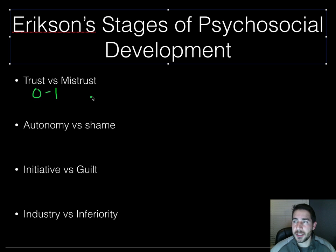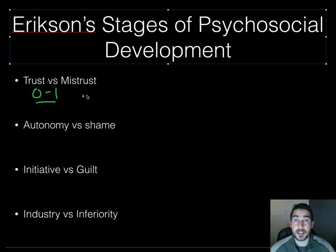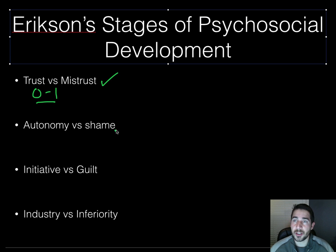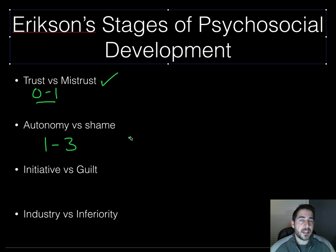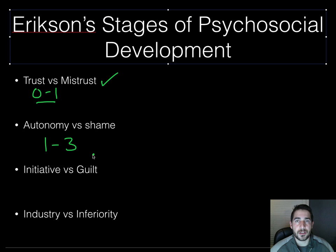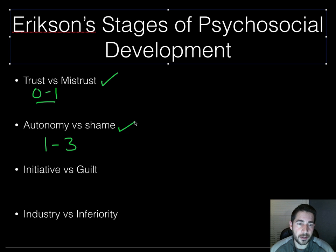Stage one is trust versus mistrust, which occurs between zero and one year old. If your needs are dependably met in that first year, you develop a basic sense of trust. If something goes wrong at any stage, it becomes a sticking point you'll face the rest of your life. If your basic needs are met, you move on. From about one to three is autonomy versus shame — the toddler years. Toddlers learn to do things for themselves. If they're able to have a little success, they move on. If they continually fail, they get stuck and will carry that shame the rest of their life according to Erikson.